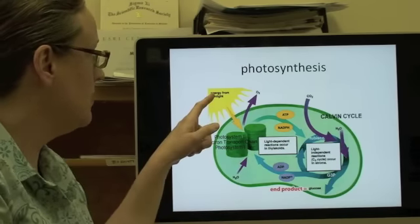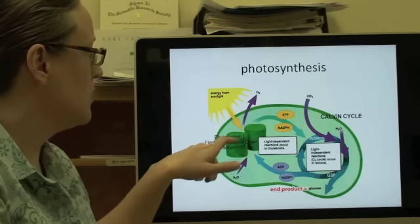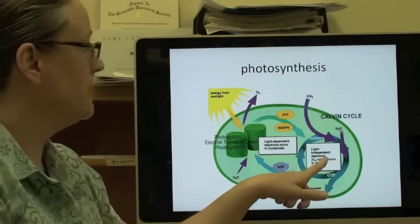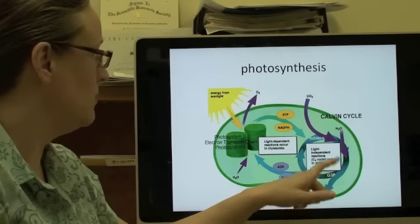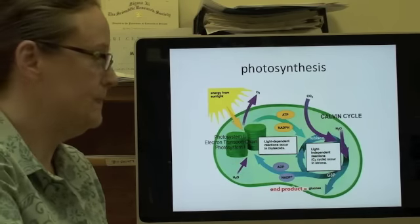So energy comes in here, and water gets used in this first light dependent reactions and oxygen is given off. It's only in the second step that we actually take in the CO2 and the end product is sugars coming off.